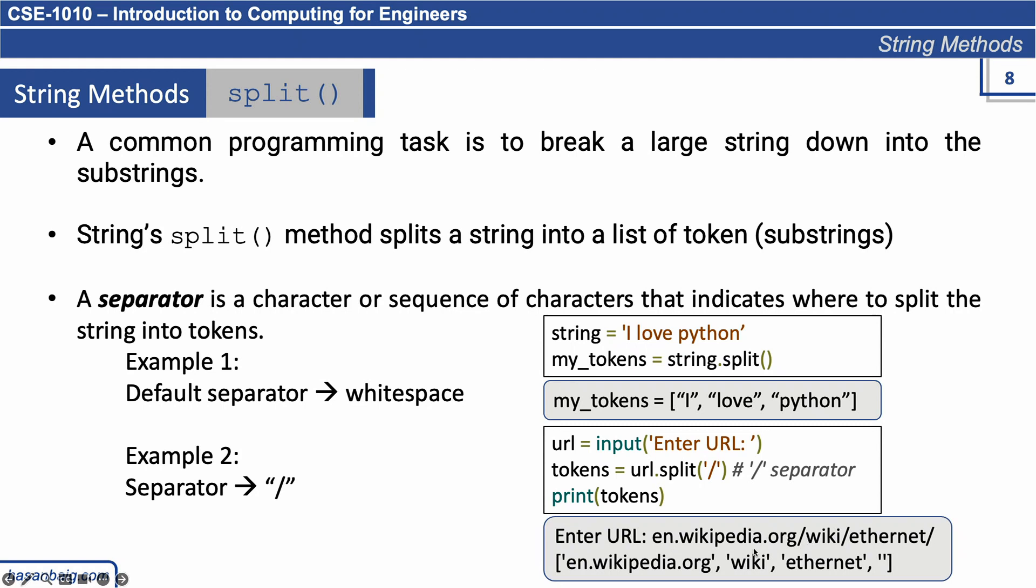Then we print tokens. Here is an example: en.wikipedia.org/wiki/ethernet/. Once we print this, you can see around every forward slash the string is split into substrings. Here you can see this is not a mistake—it's an empty string because we have a forward slash at the end also.